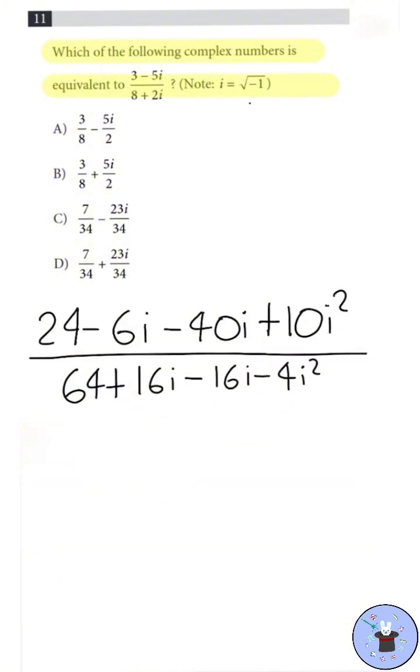We can then simplify the numerator. 24 minus 46i plus 10i squared. We can see in the note here that i equals square root negative 1. So, i squared should equal negative 1. Negative 1 times 10 equals negative 10. So, our simplified numerator is 14 minus 46i.